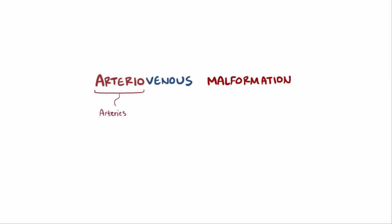Arterio refers to the arteries, which are the blood vessels that take blood away from the heart, and venous refers to the veins, which carry blood toward the heart. Mal means badly, so an arteriovenous malformation, or AVM, is some sort of bad or abnormal formation between the arteries and the veins.